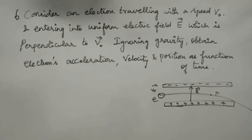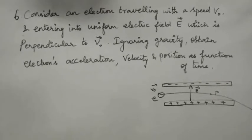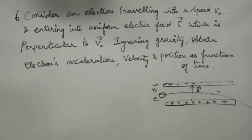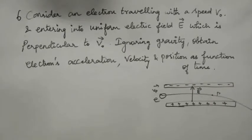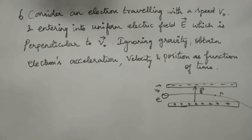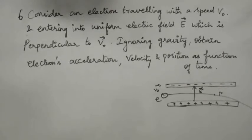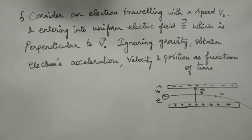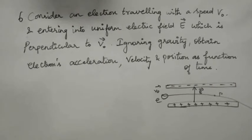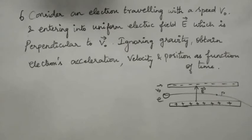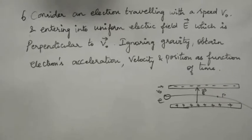Let us now move on to question number 6 of your book back exercise problem in the first unit, electrostatics. The question is: consider an electron traveling with speed V₀ and entering into a uniform electric field E which is perpendicular to V₀. Ignoring gravity, obtain the electron's acceleration, velocity, and position as a function of time.